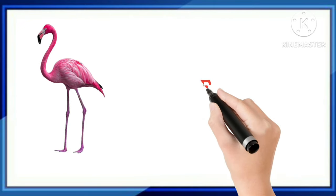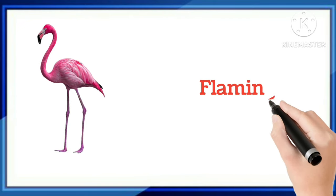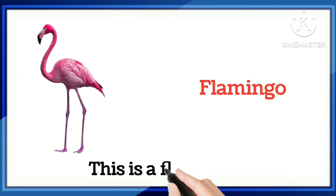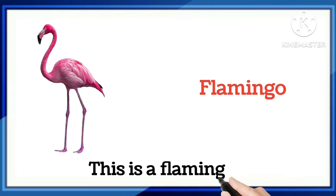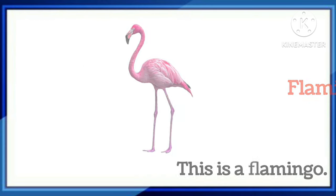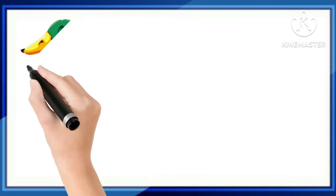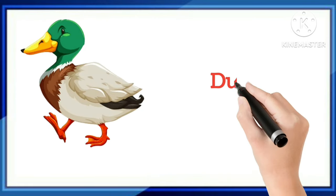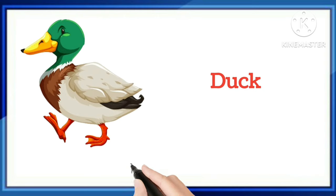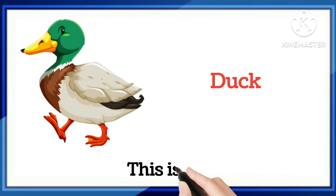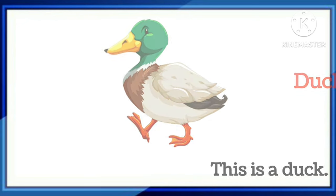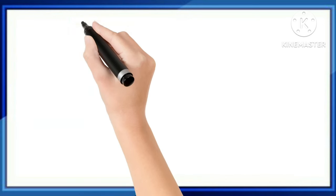And which word is this? This is a flamingo. Say with me: this is a flamingo. And which word is this? This is a duck. Once more: this is a duck.